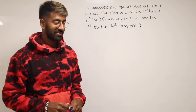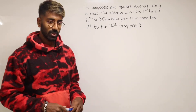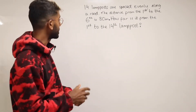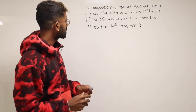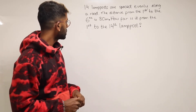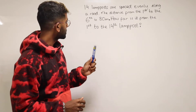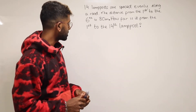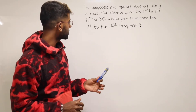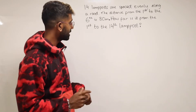Welcome back to the channel. We've got another 11 plus question. We've got 14 lampposts that are spaced evenly along a road. The distance from the first to the sixth is 80 metres, and we've got to find how far it is from the first to the 14th lamppost.